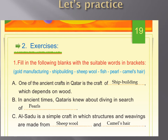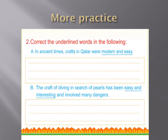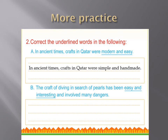We go to question number two: correct the underlined words in the following. In ancient times, crafts in Qatar were modern and easy. Whatever is underlined is not correct, and we as students should correct it. So what is the opposite of modern and easy? In ancient times, crafts in Qatar were simple and handmade — that's what you will write.